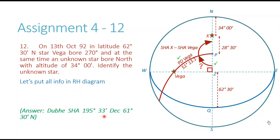The SHA comes out to be 195° 33' and declination comes out to be 61 degrees 30 minutes north. We go to the star information table on page 268, look for SHA 195° 33', match the declination, and we can identify the star as Dubhe. We used the same principle throughout: put all information in the rational horizon diagram, applied spherical trigonometry and Napier's rule, and were able to find the SHA and declination of the star, identifying it.